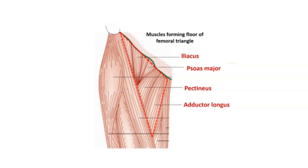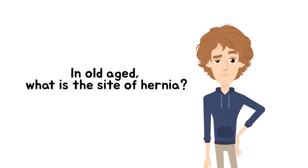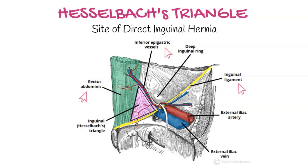From medial to lateral, the floor is formed by adductor longus, pectineus, psoas major, and iliacus. Use the mnemonic NAVEL for contents: femoral Nerve and Vessels, Empty space, and Lymphatics. In older patients, what's the site of inguinal hernia? It's Hesselbach's triangle, the site for direct hernia — laterally bounded by the epigastric artery, inferiorly by the inguinal ligament, and medially by the lateral border of rectus abdominis where it attaches to the iliac crest.